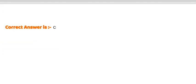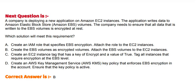The correct answer is Option C. Next question: A company is deploying a new application on Amazon EC2 instances. The application writes data to Amazon Elastic Block Store volumes. The company needs to ensure that all data written to the EBS volume is encrypted at rest. Which solution will meet this requirement? Option A: Create an IAM role that specifies EBS encryption and attach the role to the EC2 instances. Option B: Create the EBS volumes as encrypted volumes and attach the EBS volumes to the EC2 instances. Option C: Create an instance tag with a key of 'encrypt' and a value of 'true'; track all instances that require encryption at the EBS level. Option D: Create an AWS Key Management Service key policy that enforces EBS encryption in the account and ensure that the key policy is active.